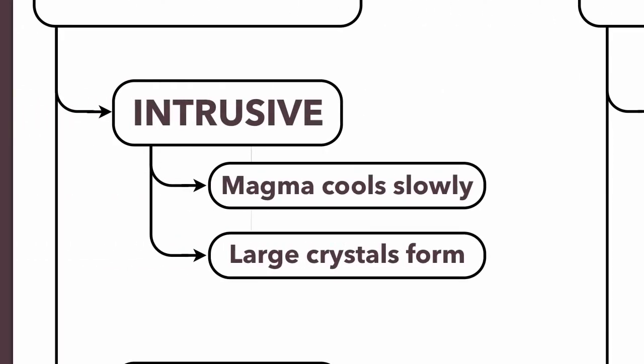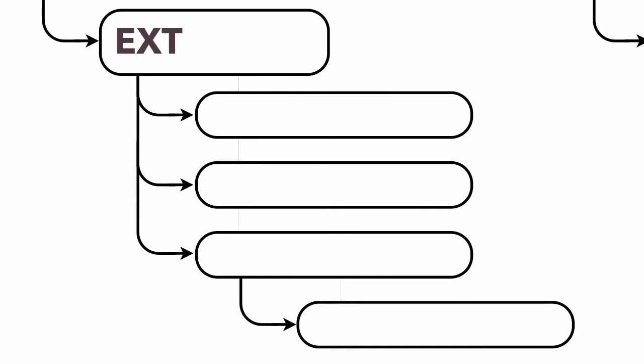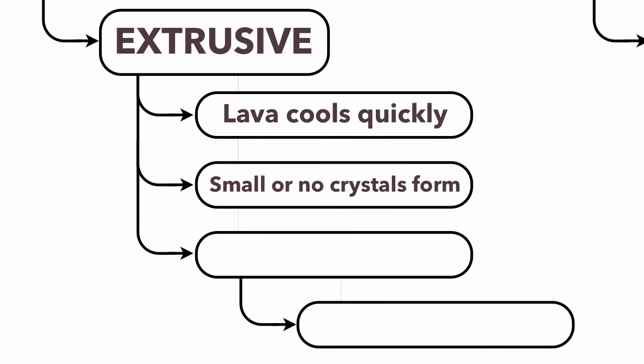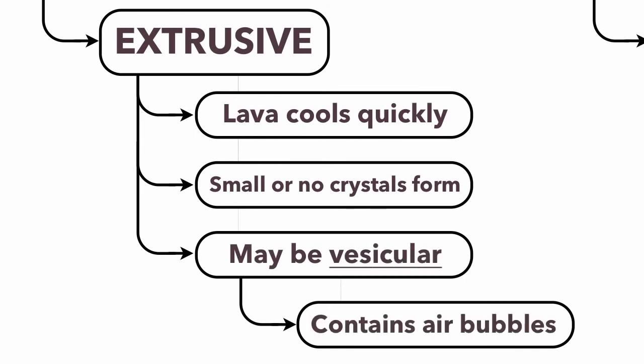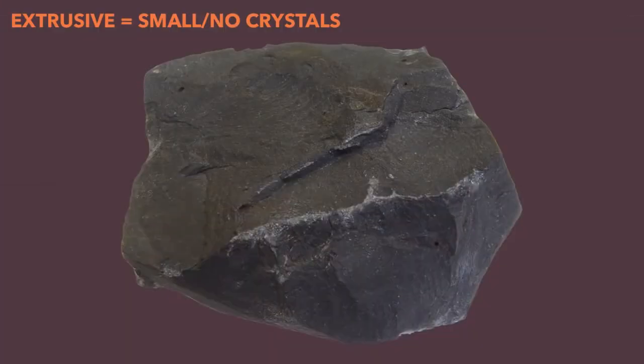What about the second type? These are called extrusive igneous rocks. Instead of forming deep underground and cooling slowly from magma, these form on the surface. Because they cool really quickly from lava, you're going to get small or no crystals at all. As a result, they may even have air bubbles trapped inside, which is something we call vesicular. So extrusive rocks form on the surface very quickly, giving very small or no crystals, and they may have air bubbles trapped inside.